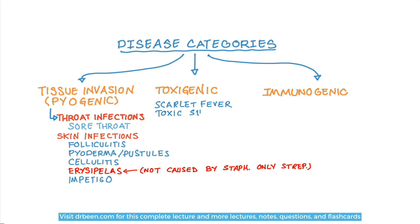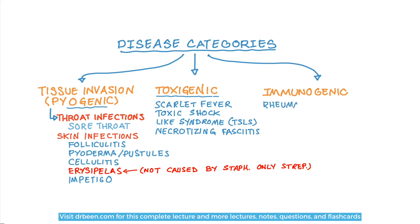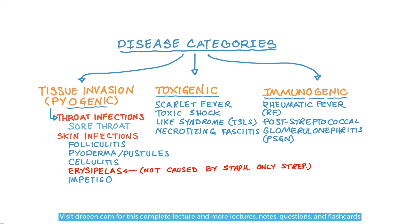The exotoxin-related or mediated diseases are scarlet fever, toxic shock syndrome, and necrotizing fasciitis. Immunologic or immunogenic diseases are caused by a couple of mechanisms. One mechanism is that the M protein of the pathogen looks very similar to the proteins in our heart, so our immune system cross-reacts and accidentally starts attacking our own heart thinking these are the M proteins of the pathogen. That is what causes rheumatic fever.